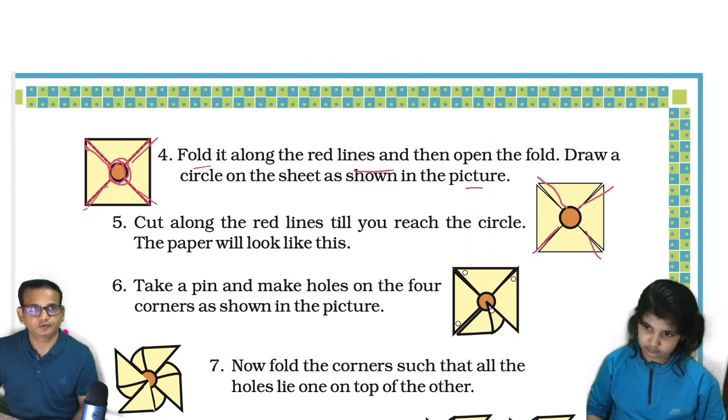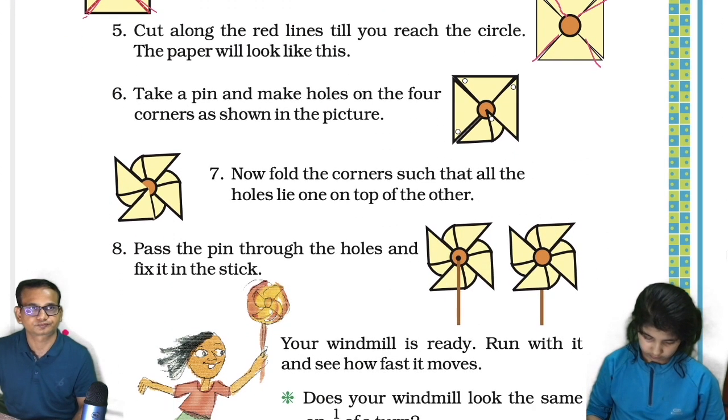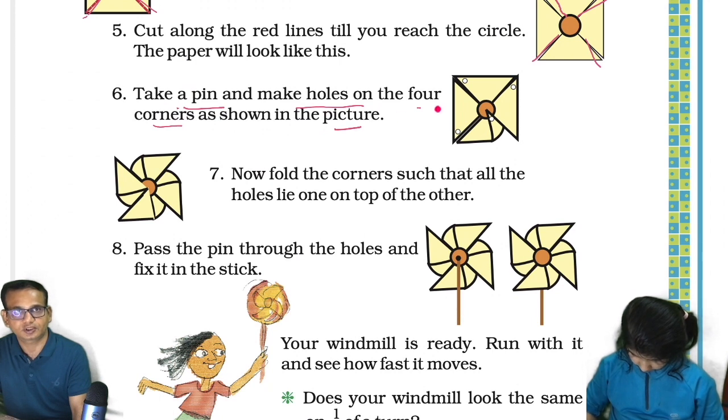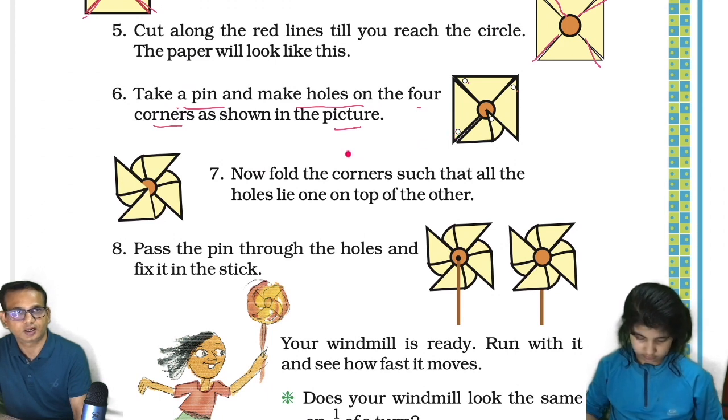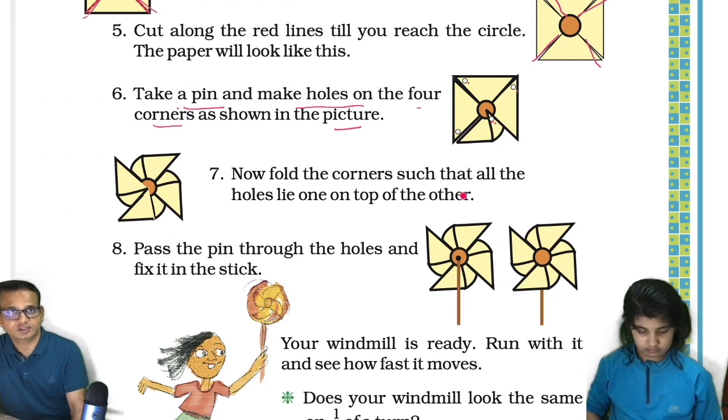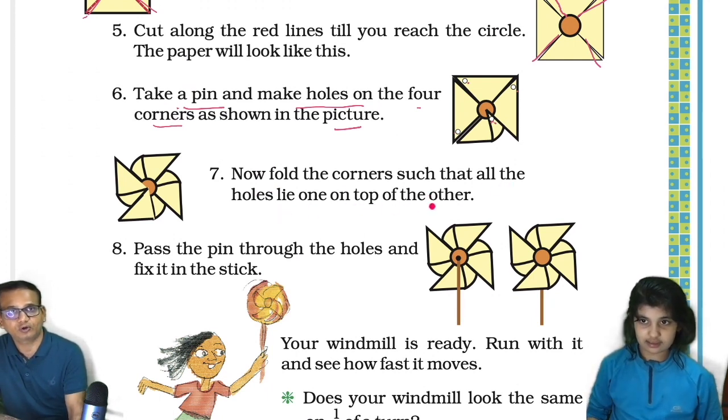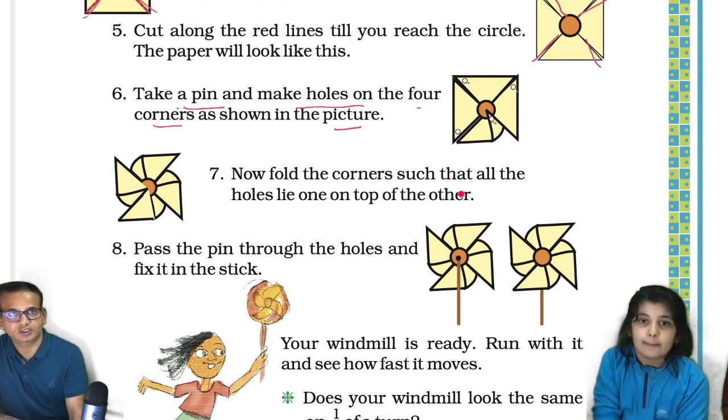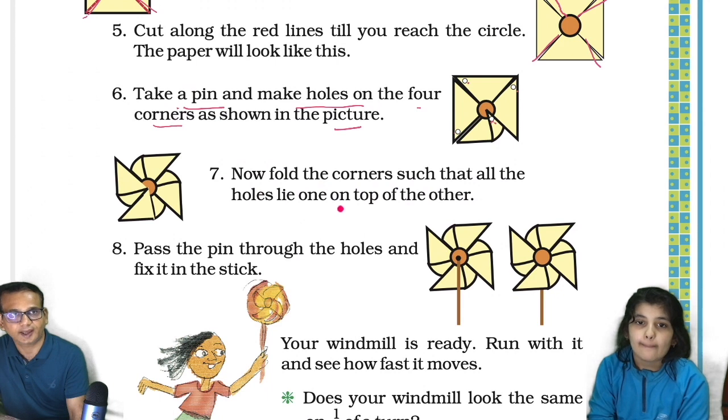And then sixth point: take a pin and make holes on the four corners as shown in the picture. So with the help of a pin you have to make a hole on these corners, okay? Four corners, four holes.